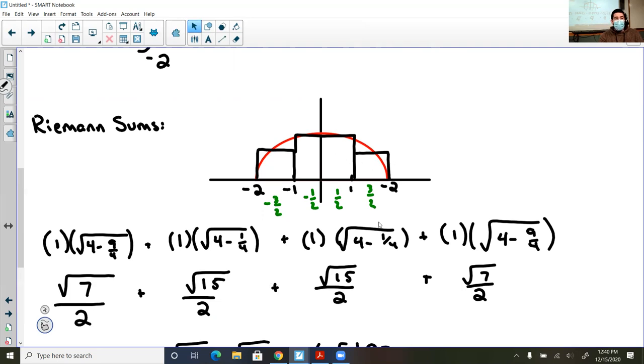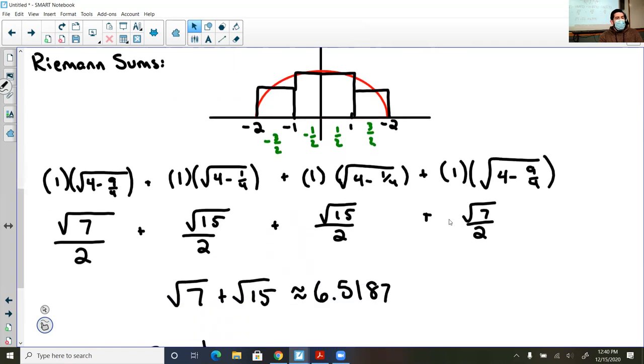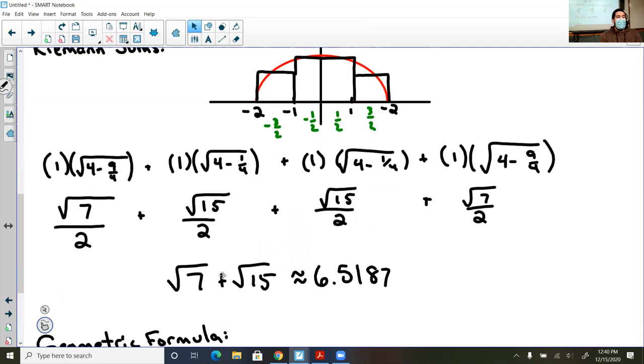And then these two rectangles were identical. So then when I add them together, root 7 divided by 2 plus root 7 divided by 2 was root 7, root 15 over 2 plus root 15 over 2 is root 15, and equal to about 6.5187. So that is the approximated area under this curve using Riemann sums.